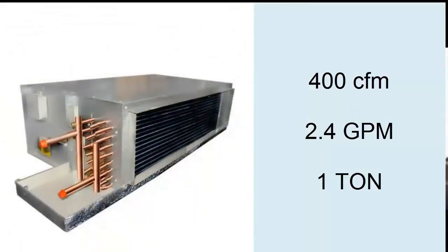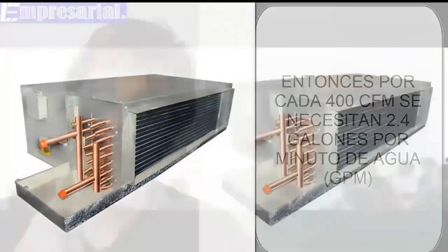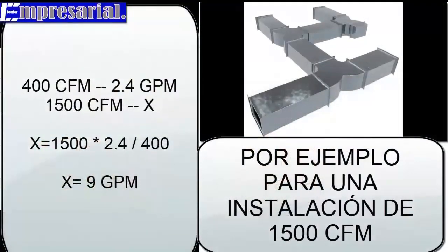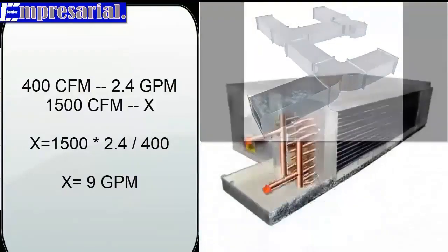In this case, 1500 CFM are being conditioned. With a simple rule of proportionality, we can know the water flow required by the fan coil. Calculating for 1500 CFM of air per minute, 9 gallons per minute of water must pass through the fan coil.